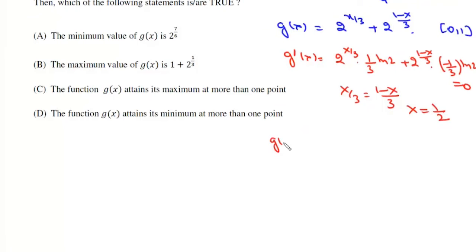Now if we find g(0), g(0) is 1 plus 2 to the power of 1 by 3. g(1) is 2 to the power of 1 by 3 plus 1.